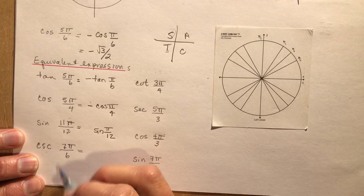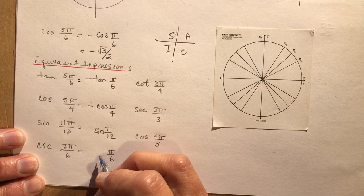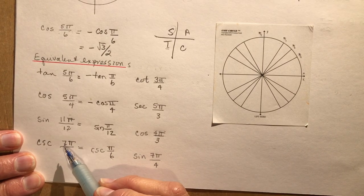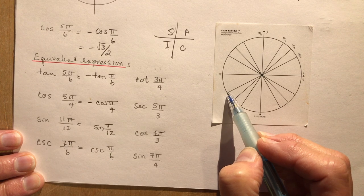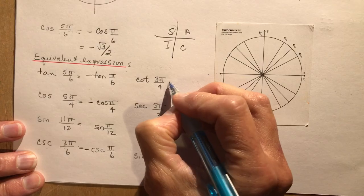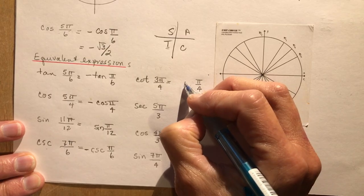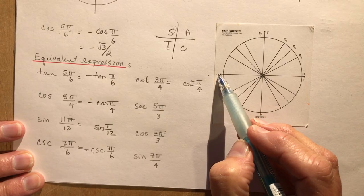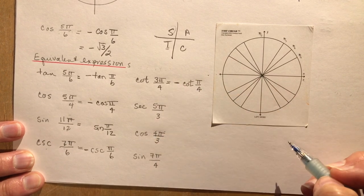For csc(7π/6): the related acute angle is π/6. Since 7π/6 puts us in the third quadrant where only tangent is positive, cosecant is negative — so it's negative csc(π/6). For cotan(3π/4): the related acute is π/4, and at 3π/4 we're in the second quadrant where only sine is positive, so this is negative cotan(π/4).